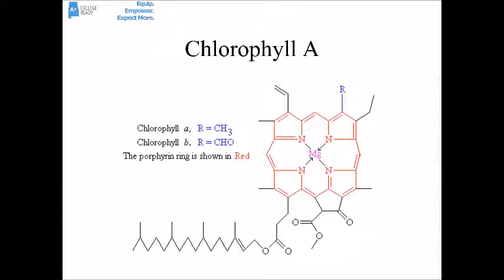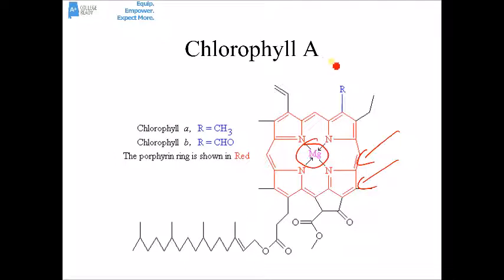Here we see chlorophyll A. In the center is a magnesium atom attached to some nitrogens. These ring-like structures are mostly made of carbons and hydrogens. It's important to remember that chlorophyll is a protein.